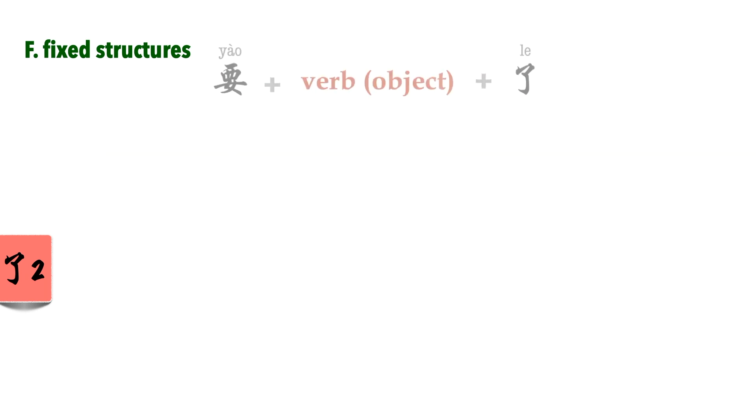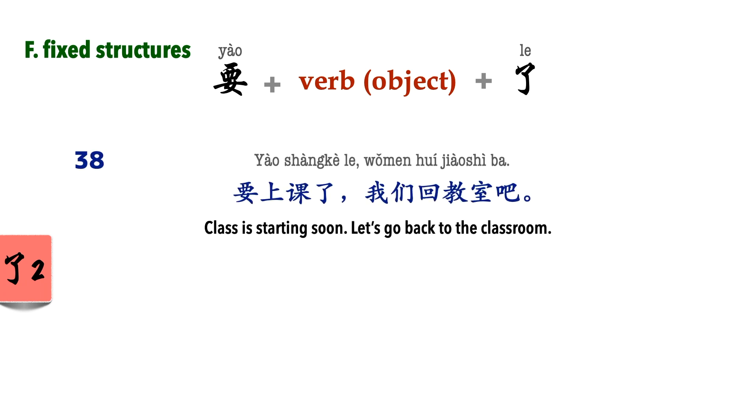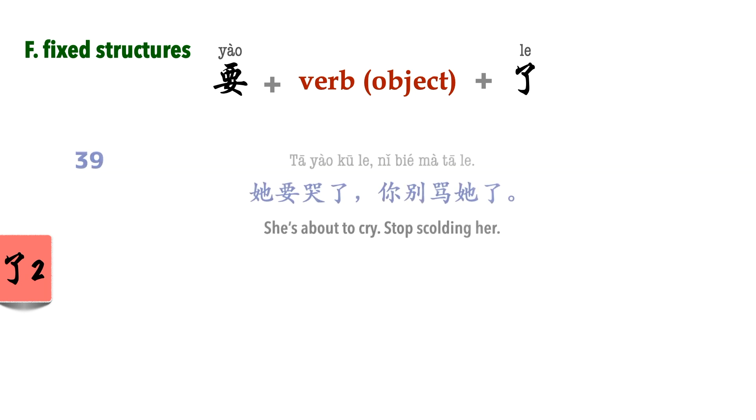要 something 了. This indicates that something's about to happen. Adjectives and nouns are also possible, but verbs are the most common in this structure. 要上课了,我们回教室吧. 他要哭了,你别骂他了.